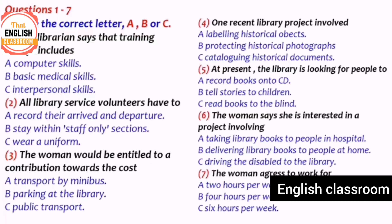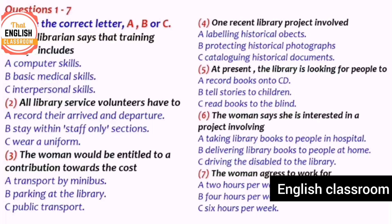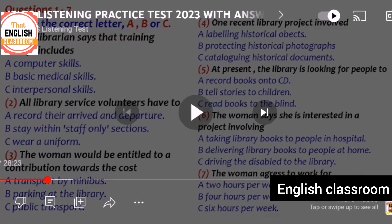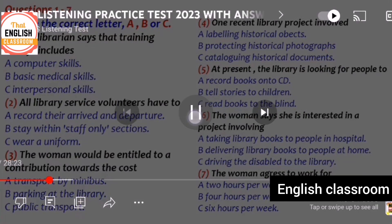The librarian says at present they have a small team who support those who are unable to read. They work with the blind and others with reading difficulties. Volunteers are given equipment so they can take books home and read them aloud onto CDs, building up a collection for those who need them. So the answer to question five is A — record books onto CD.